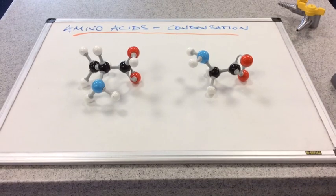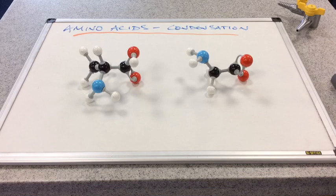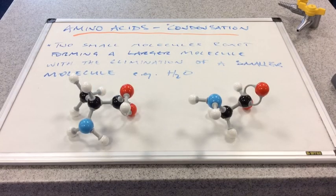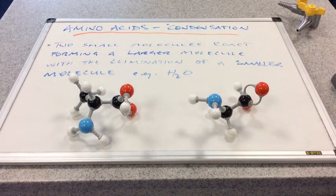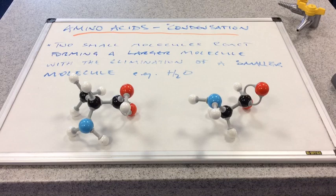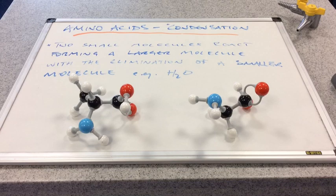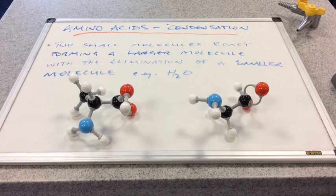In this video I'm going to look at the condensation reactions of amino acids. So a good place to start is obviously the definition of a condensation reaction. So you can see it's written up on the board there. Condensation reactions are when two small molecules react together to form a larger molecule with the elimination of a smaller molecule such as water. So that's the link with condensation, the water byproduct.